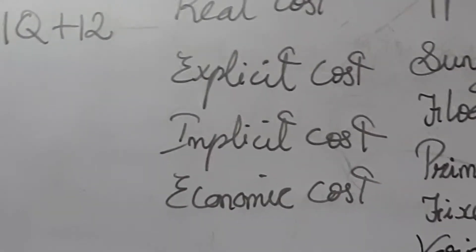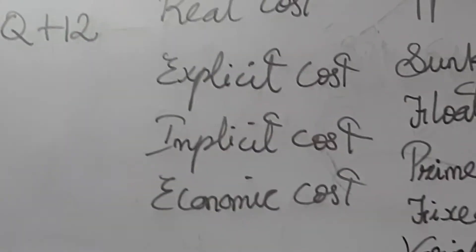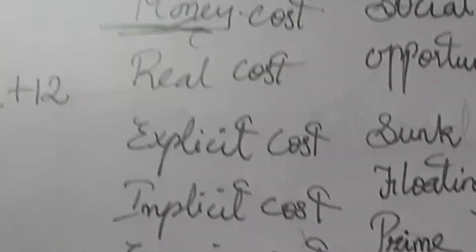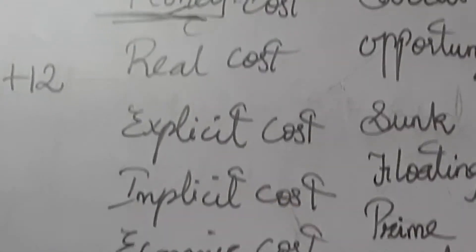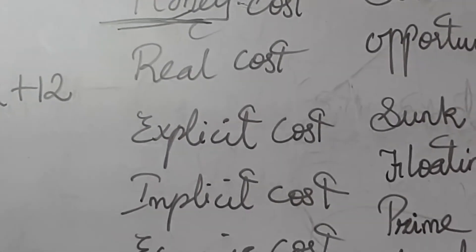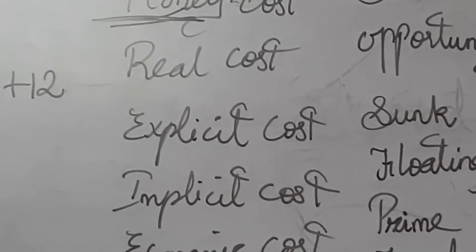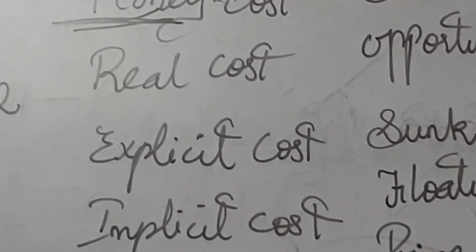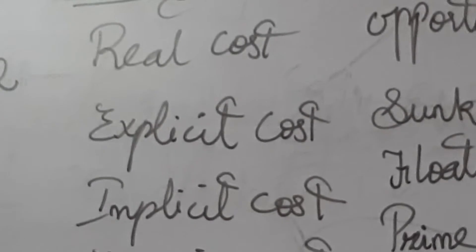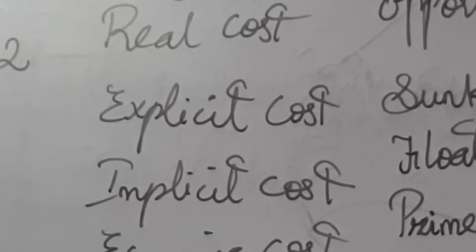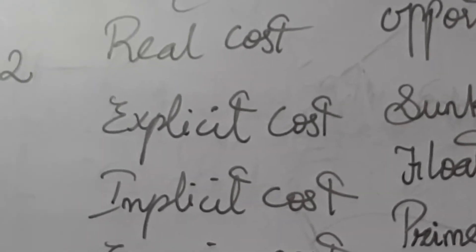Explicit cost is the payment made to others for the purchase of factors of production. This includes wages, payment for materials, rent for the building, interest for capital, expenditure on transport, advertisement, and license fees — all come under explicit cost.